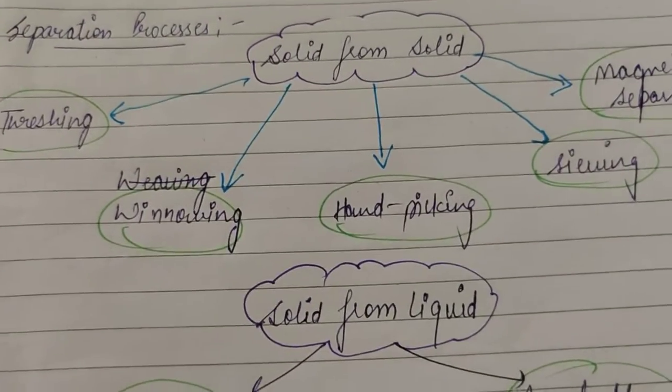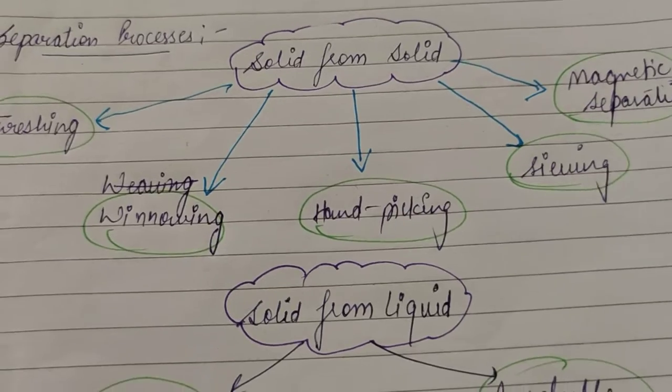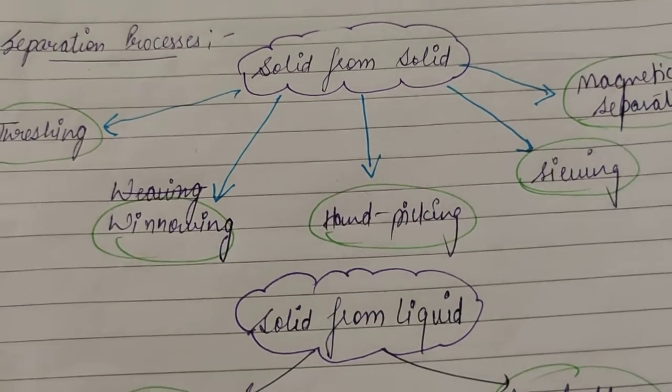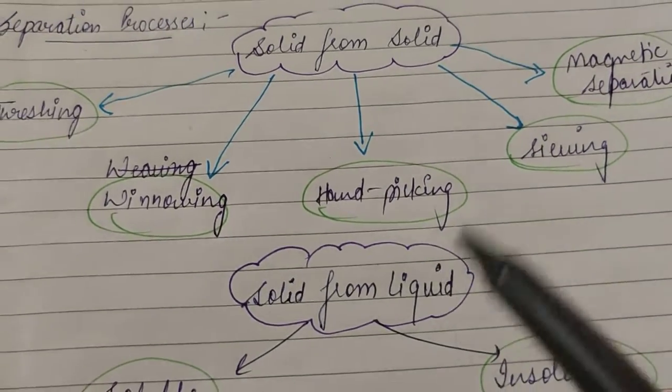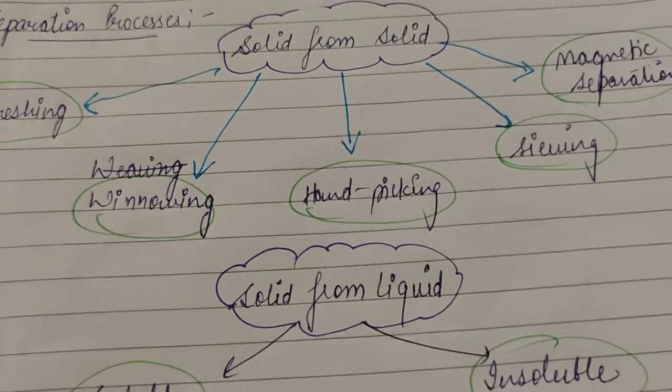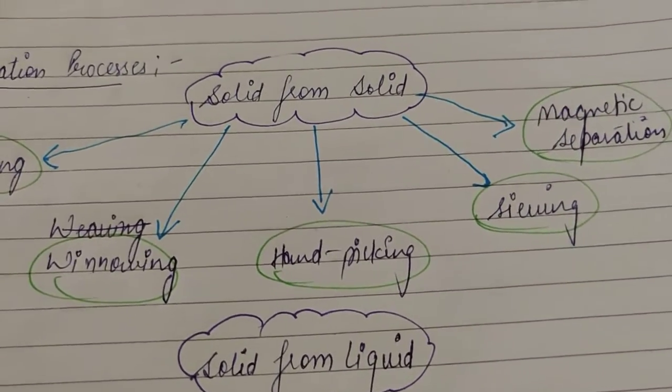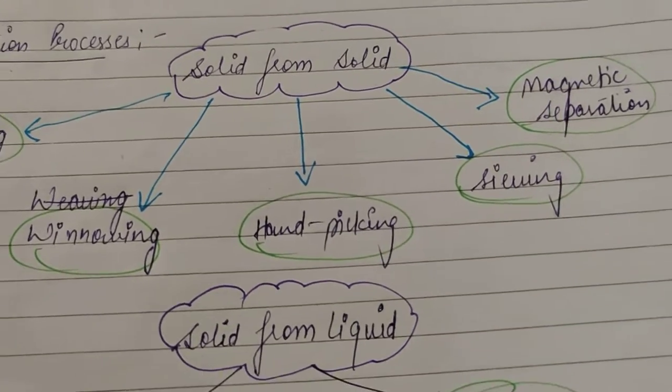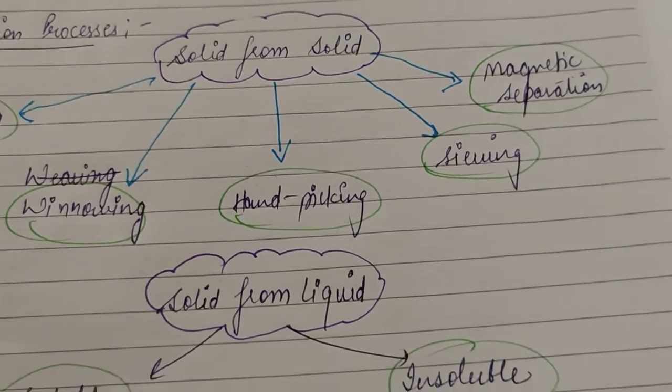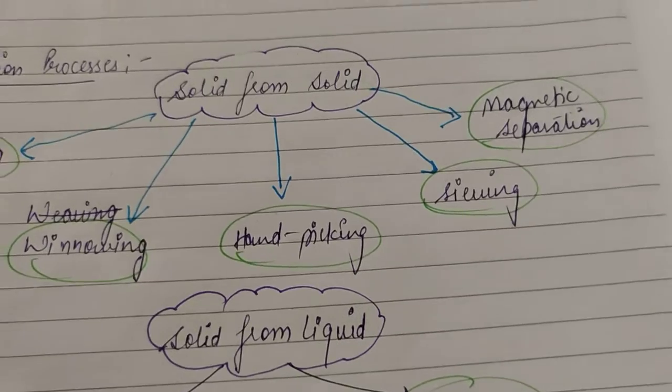And in hand picking, what do we do? If the particle size is much bigger and you can easily see the impurities or they are less in number, then you can just pick them up with your hand and separate it. Then is sieving. In sieving, the particles are separated on the basis of their size. The smaller particle crosses the sieve and the bigger particles remain in the sieve.